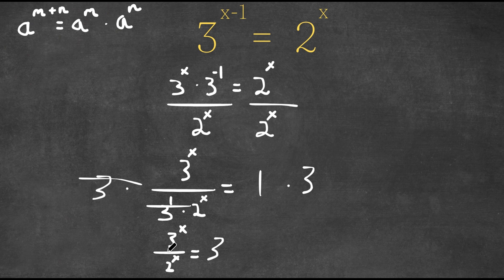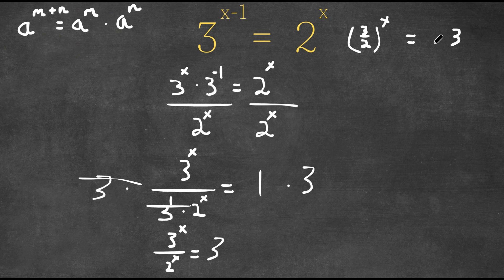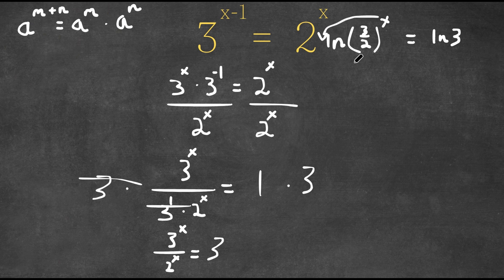So now this can be written as 3 over 2 to the power of x is equal to 3. Now if I take the ln of both sides, the exponent x can actually be moved to the front of the ln, because this is an important property of logarithms.